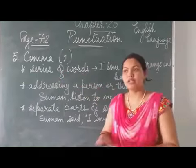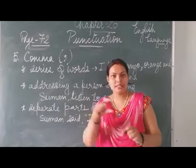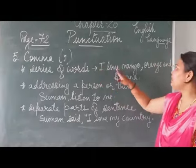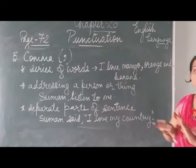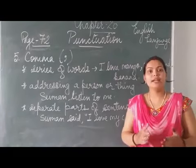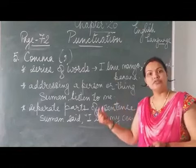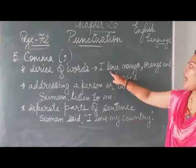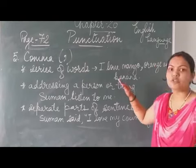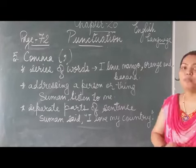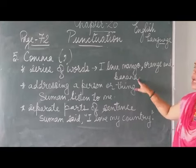For example, the words are from the same category — different words of the same thing. For example, 'I love mango, orange and banana.' Here you can see mango, orange, banana — these all things are fruits only. So when we are listing two or three things of the same series, to separate that series of words we use comma: 'I love mango, orange and banana.' While reading also, at a comma we give a small, brief pause.